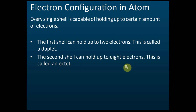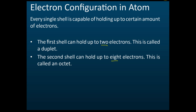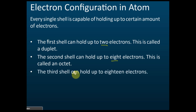What is the maximum number of electrons that can be held in the third shell? The first shell holds two electrons, the second holds eight electrons. The third shell can hold up to 18 electrons — not eight, but 18 electrons.